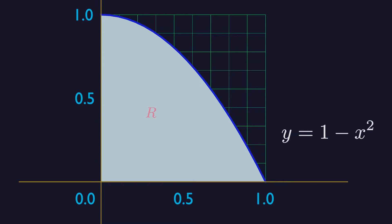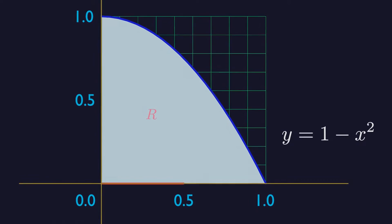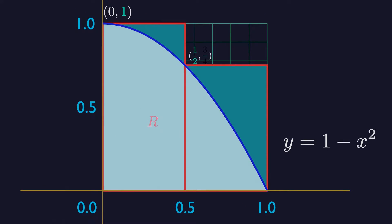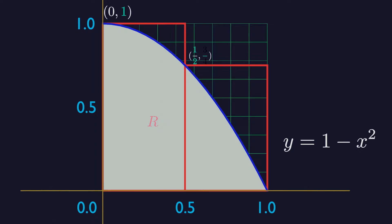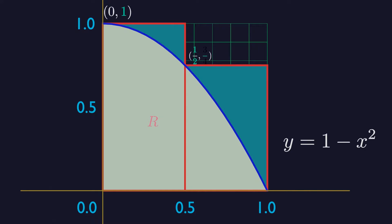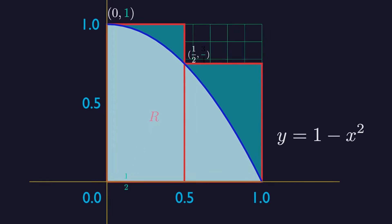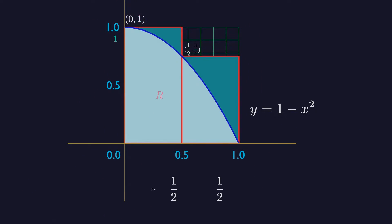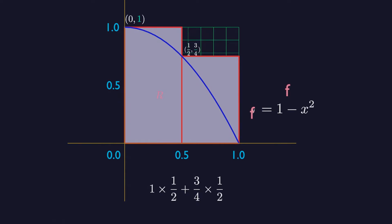While we do not yet have a method for determining the exact area, we can approximate it in a simple way. Two rectangles that together contain the region of area — each rectangle has width 1/2, and they have heights 1 and 3/4. The height of each rectangle is the maximum value of the function f in each sub-interval. The total area of the two rectangles approximates the area A of the region R.